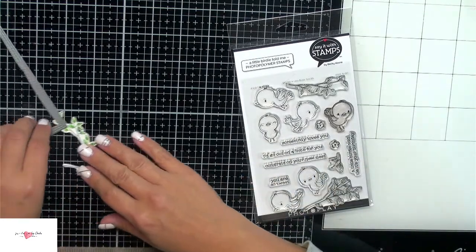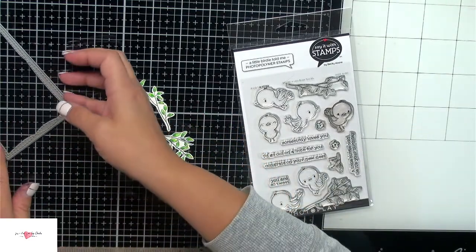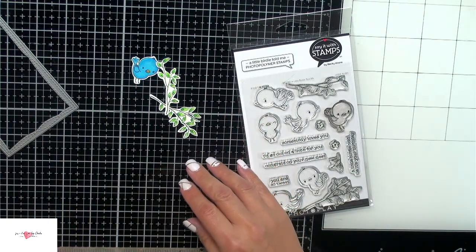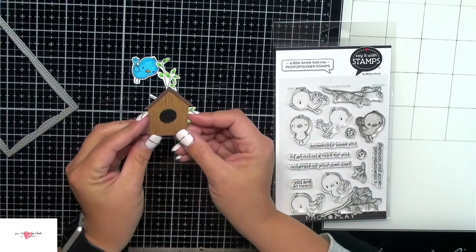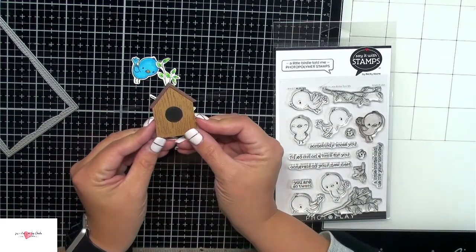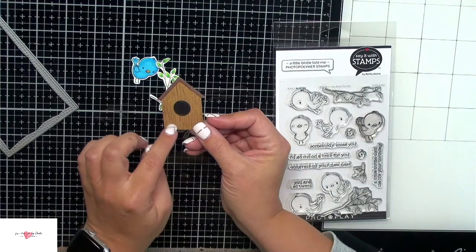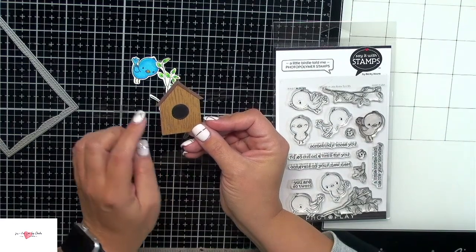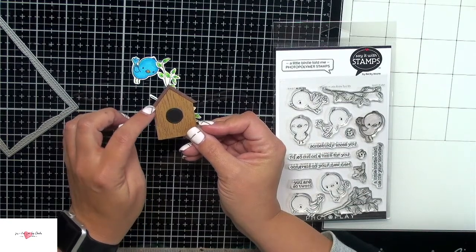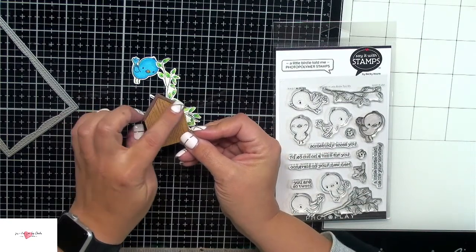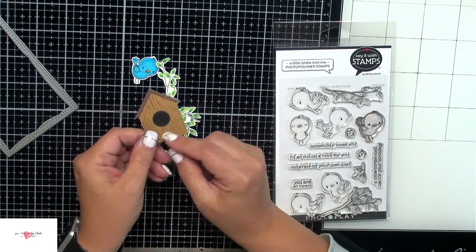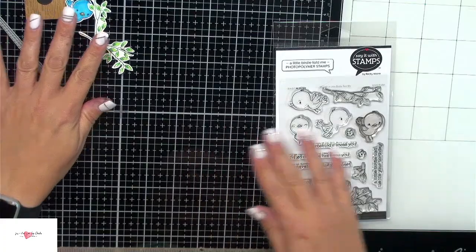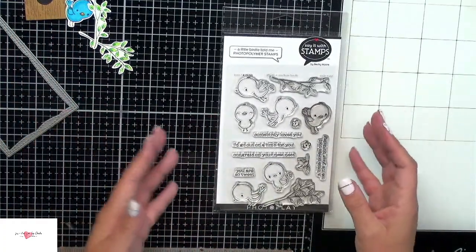I've gone ahead and stamped, colored, and fussy cut out some of the little branches in the bird. Then I used the Brutus Monroe build a birdhouse again. I just recreated another little birdhouse and just put it together again, using that barnwood stamp from Tim Holtz. I just did some Copic coloring on this little brown piece here for the roof. And again, just a little black piece of cardstock for the hole. So that was really simple. Got that all done off camera because that takes quite a bit of time.